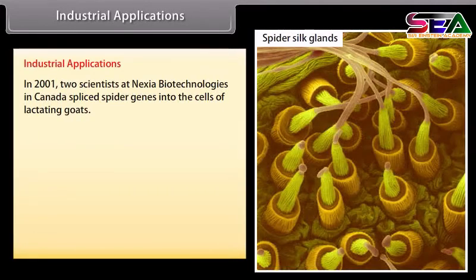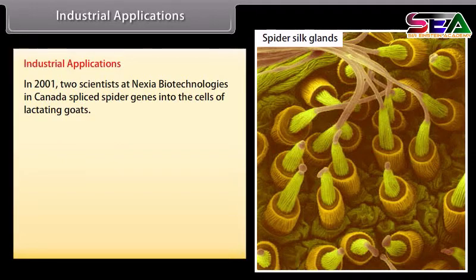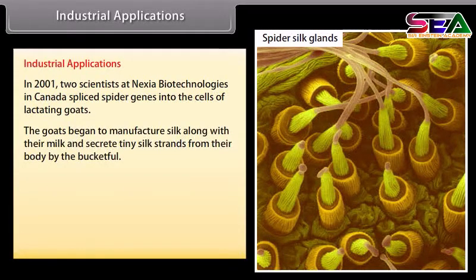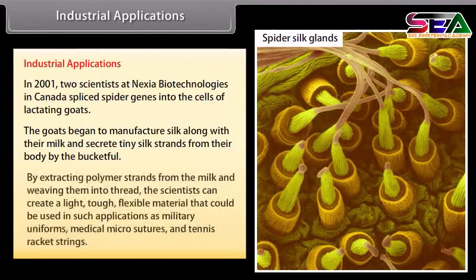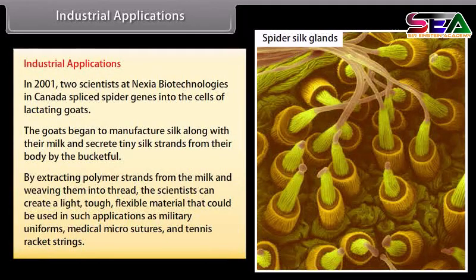Industrial applications: in 2001, two scientists at Nexia Biotechnologies in Canada spliced spider genes into the cells of lactating goats. The goats began to manufacture silk along with their milk and secrete tiny silk strands from their body. By extracting polymer strands from the milk and weaving them into thread, the scientists created a light, tough, flexible material that could be used in applications such as military uniforms, medical micro-sutures, and tennis racket strings.